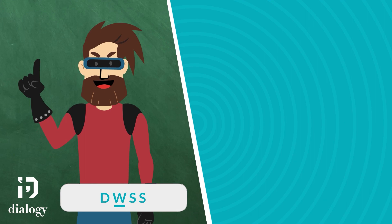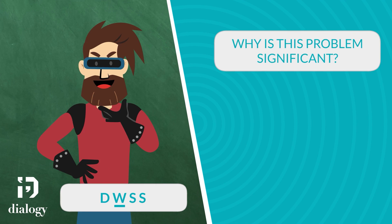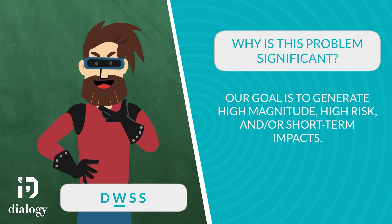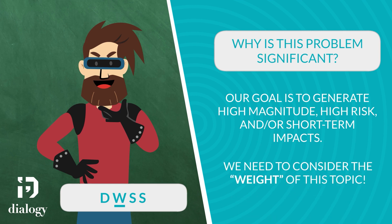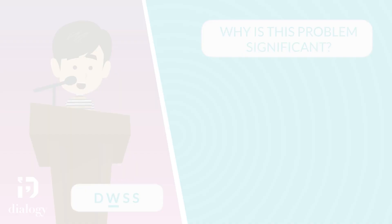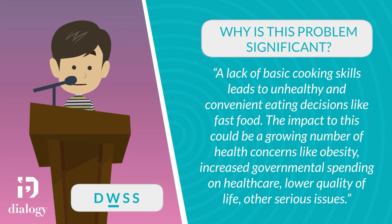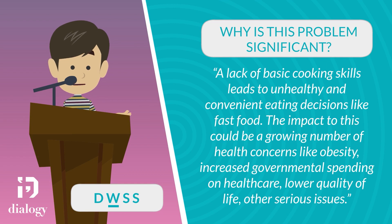Now we need to clarify why a lack of cooking skill is important with our second question: why is this problem significant? With this question, we are attempting to generate high magnitude, high risk, and/or short timeframe impacts for our side. A lack of cooking skills among citizens is potentially harmful, but we need to consider the weight of this topic. For example, a lack of basic cooking skills leads to unhealthy and convenient eating decisions like fast food, which could result in a growing number of health concerns like obesity, increased governmental spending on healthcare, lower quality of life, and other serious issues.